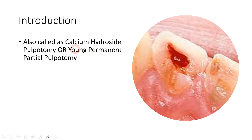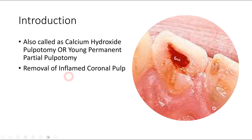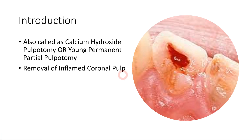We can also call it calcium hydroxide pulpotomy or young permanent partial pulpotomy. This procedure basically involves the removal of inflamed coronal pulp. In conventional pulpotomy, the entire pulp in the coronal part is removed. However, in Svex pulpotomy, only 2 to 4 mm of the inflamed part is removed, and the rest of the pulp remains intact.